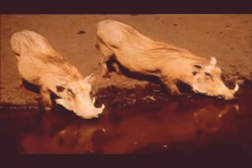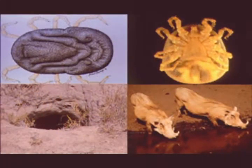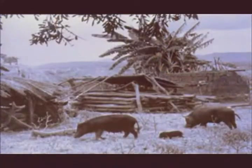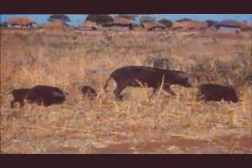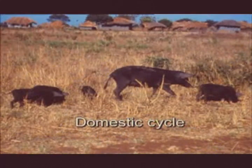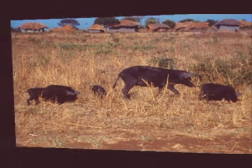Certain animals live in animal burrows and free-living suids, warthogs in particular. This we refer to as the sylvatic cycle. The other cycle also usually involves tampans, but in this instance, domestic pigs indigenous to the area rather than wild suids provide the vertebrate host.